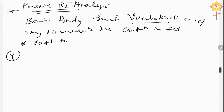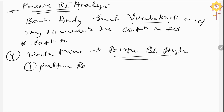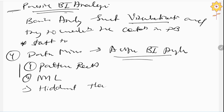The fourth component is data mining, which is also known as active BI analysis. Here we perform analysis that includes pattern recognition and machine learning, and we apply these techniques to find out the hidden patterns and solutions that are available in our data.